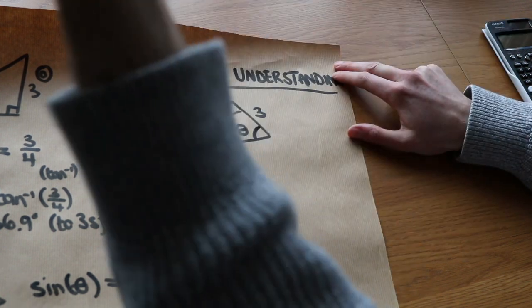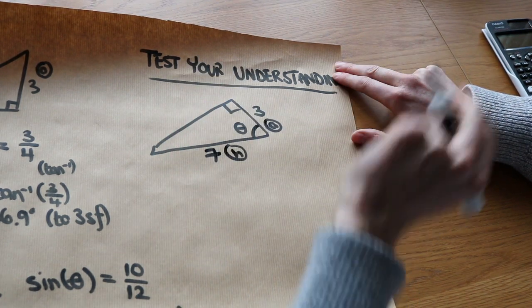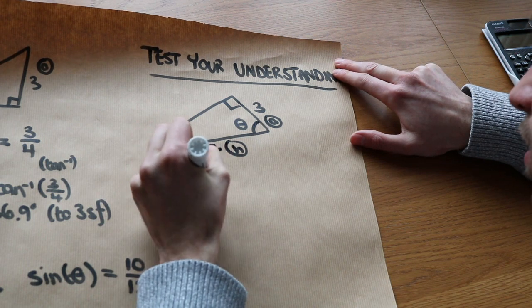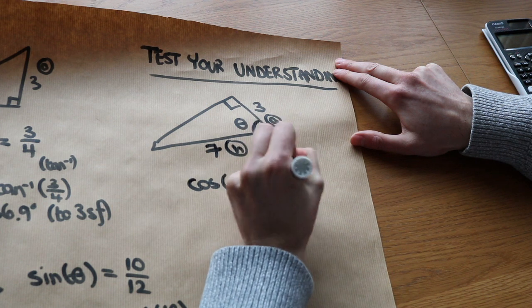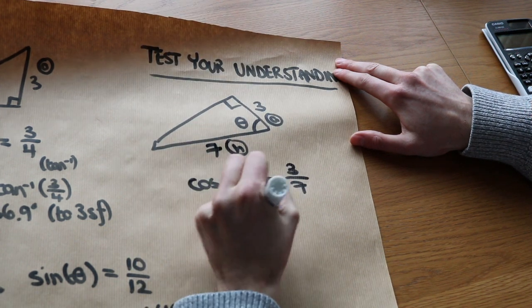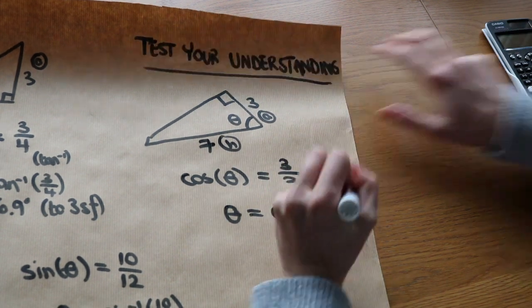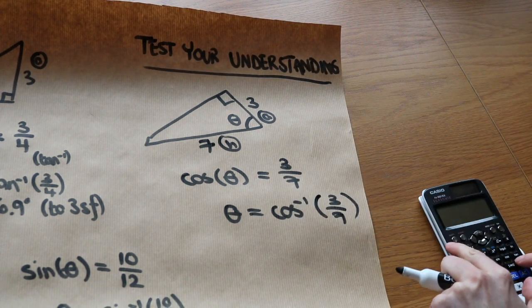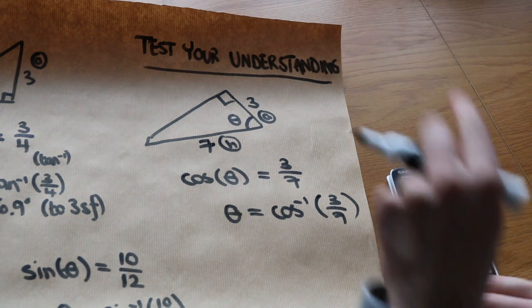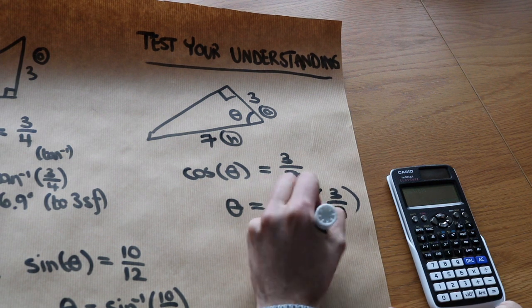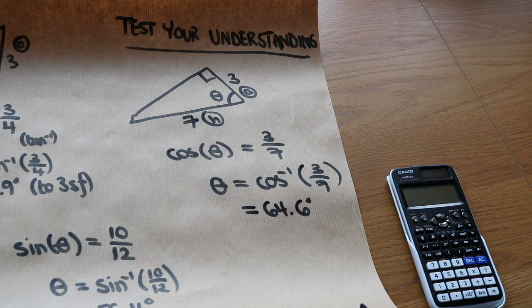Hopefully you've had some time. Let's label these sides. That is the adjacent, that is the hypotenuse. SOHCAHTOA, so it's going to be cos. So we're going to do cos of the angle is equal to adjacent over hypotenuse, three over seven. Then we do inverse cos of both sides. So theta is inverse cos of three over seven. Shift cos of three over seven, and that's going to give me 64.6 degrees. Does that look sensible? Yes, it does look sensible. So well done if you got that right.